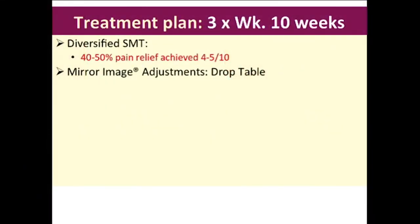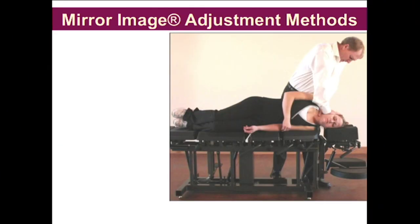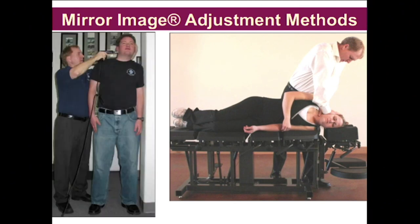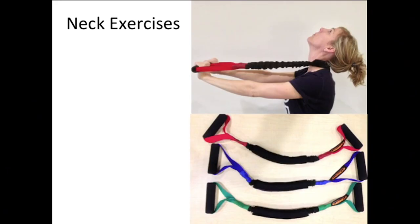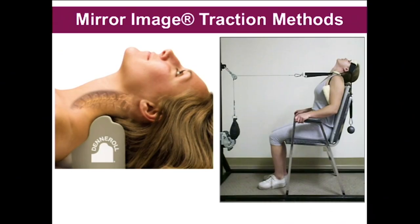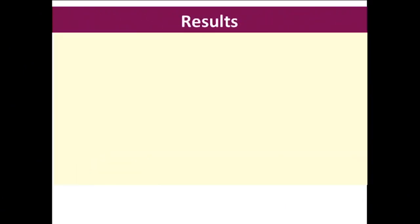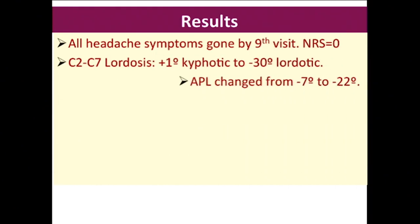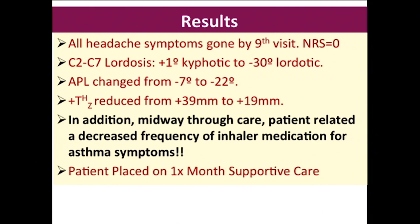Treatment plan: three times a week for 10 weeks, 30 visits. We did typical diversified chiropractic — adjusting segments of the spine improves mobility, helps with pain and neurology. Mirror image adjustments: head translated to the right, so we lie the patient on the left and translate the head to the left and apply a force. We also exercise the neck curve — a mirror image neck exercise called the prolordotic, applying a load to force the curve in while bending and translating the head backwards. And we did traction — mirror image traction both in the office and at home. Result: all headaches were gone, neck curve changed, asthma improved. Patient placed on maintenance.